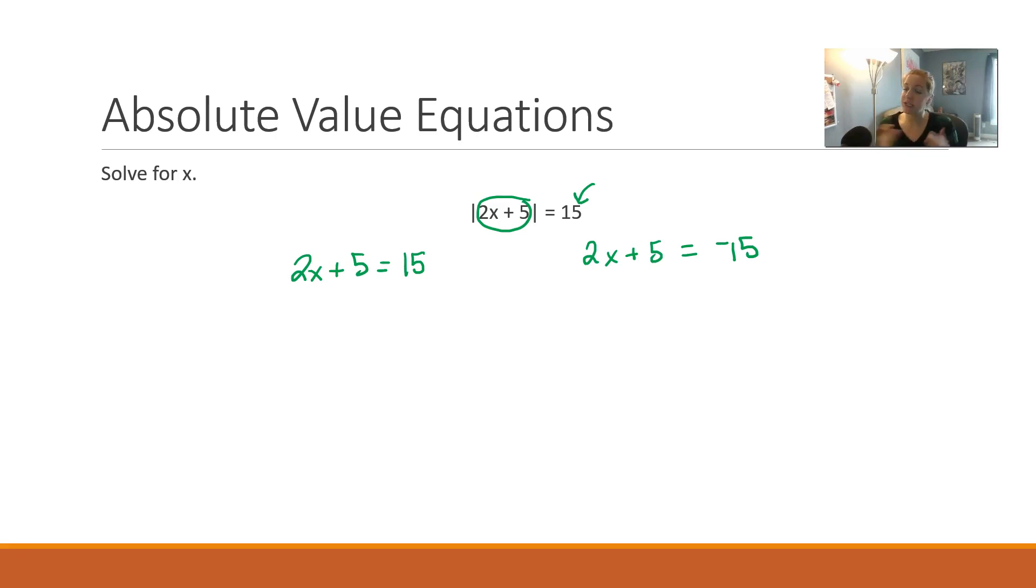As soon as I split it into these two equations, I drop the absolute value because I've already dealt with it. I'm breaking it out of those bars, breaking it out of jail. So let's go and solve each of these. 2x equals 10. Divide both sides by 2. X equals 5. We have one answer.